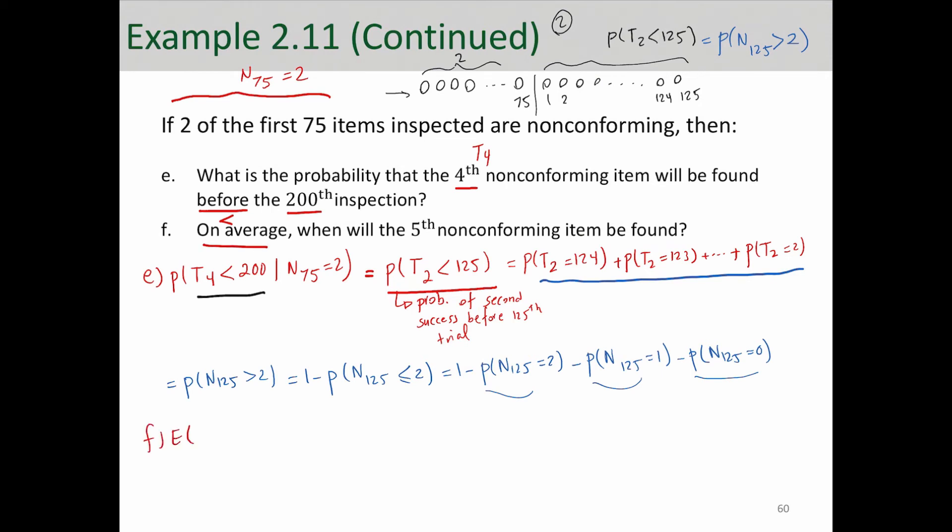So expected value of T5 given the same condition, N75 is equal to 2. Well, we have passed through 75 inspections and we have seen two non-conforming. So we have three more non-conforming to observe. So that changes this expected value to expected value of T3, but plus 75.